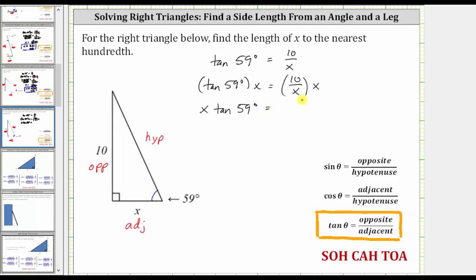On the right, we can simplify before multiplying. X as a fraction has a denominator of one. We have a common factor of x between the numerator and denominator. X divided by x simplifies to one. The right side simplifies to 10 times one, which is 10. To solve for x, we divide both sides by tangent 59 degrees.